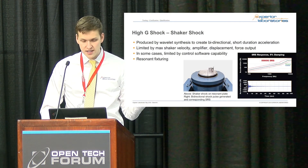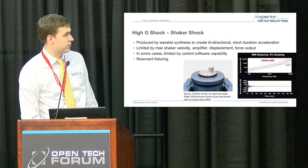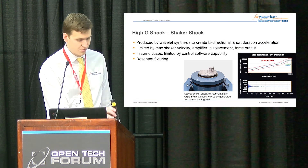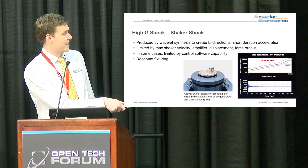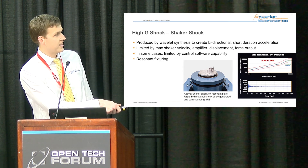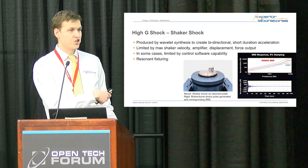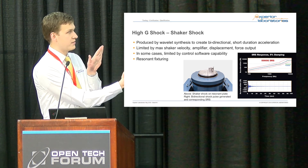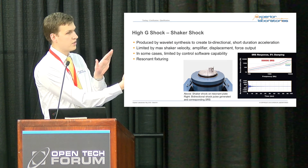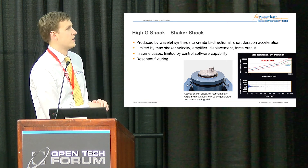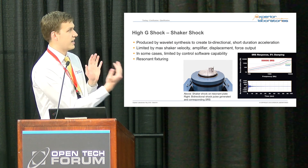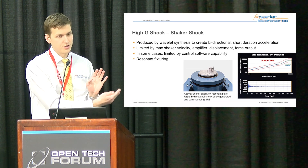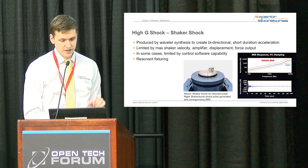High G shaker shock is also bi-directional. You can see both positive and negative acceleration on the shaker, produced with wavelets — you stack waves of different frequencies or alternate them to generate an SRS. Like with vibration, you can also use resonant fixturing to boost what you're getting for large payloads.